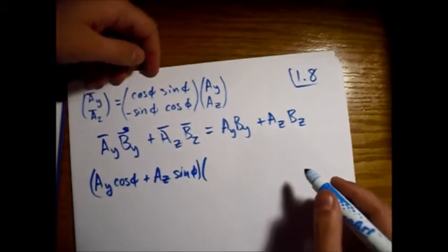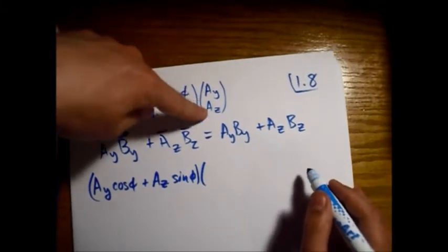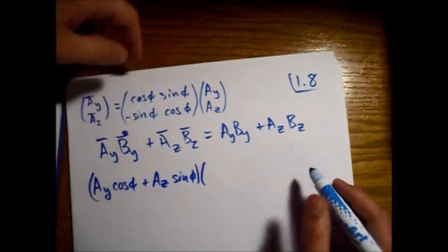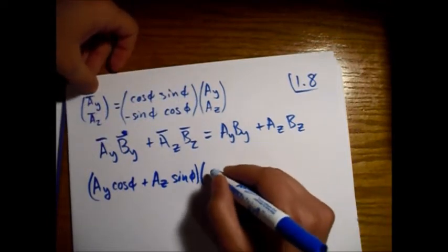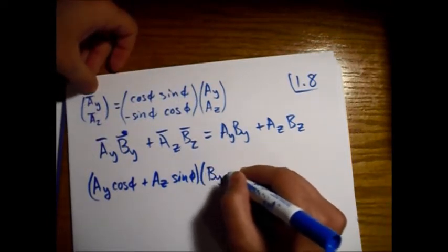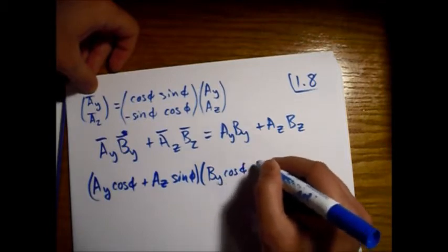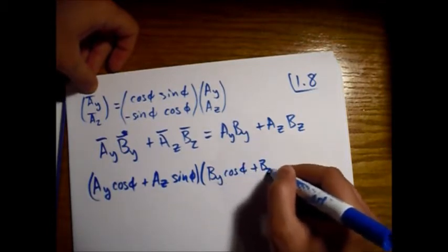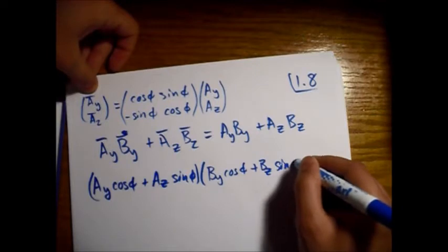And multiply that by B. So just replace these A's by B's and we get the same thing. So, A_y cosine φ plus B_z sine φ,